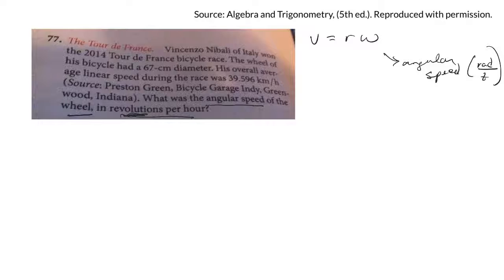All right, so let's try it. I need to solve for angular speed. Angular speed is equal to velocity over the radius. The velocity is this, that's how fast he's going: 39.596 kilometers per hour.